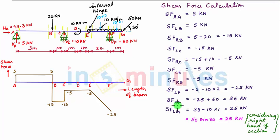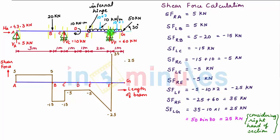Now shear force towards the right of F is 35 kN. So let us plot a 35 kN shear force using proper scale and connect it by means of a vertical line. Now shear force towards the left of G is plus 25 kN. So at point G, let us plot plus 25 kN shear force. Again we see between point F and G there is a uniformly distributed load, so variation of shear force between F and G will be linear — let us connect it with an inclined straight line down to the zero line. So we see shear force is positive between A and B and F and G, whereas it is negative between point B and F.